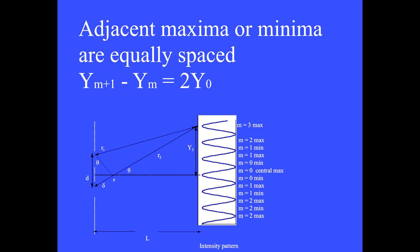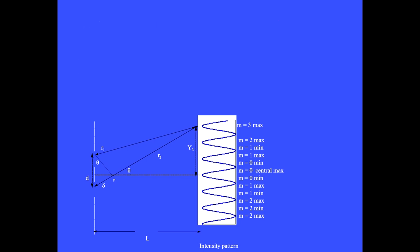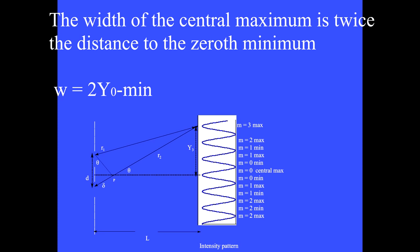Adjacent maxima or minima are equally spaced, by a distance equal to twice the distance to the 0th minimum. The width of the central maximum is twice the distance to the 0th minimum.